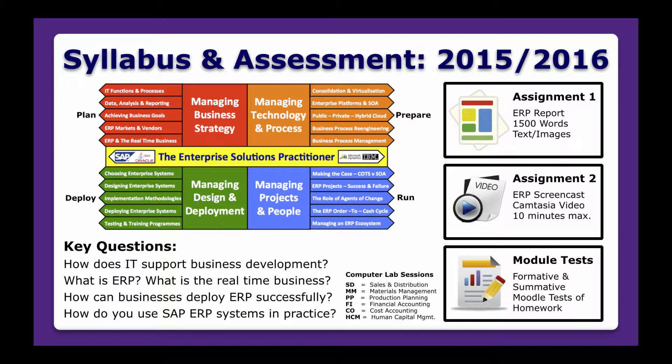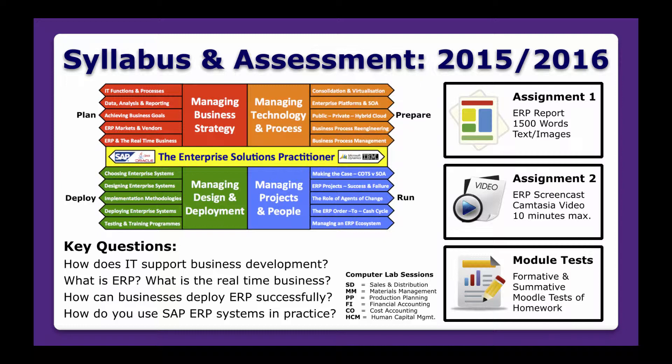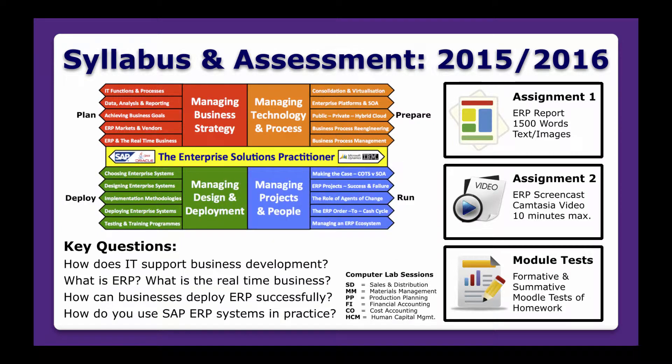There are three main pieces of assessment. There's a 1500 word ERP report looking at how, in summary, we deploy an enterprise-wide software system and some of its features. Assignment 2 is a video — a screencast made using Camtasia Studio, or one of the Camtasia pieces of software. It's 10 minutes maximum.